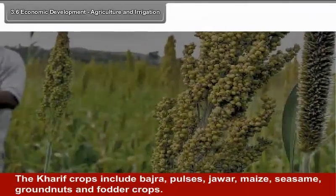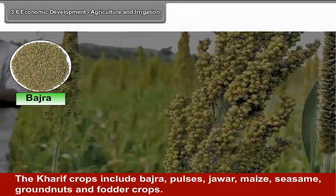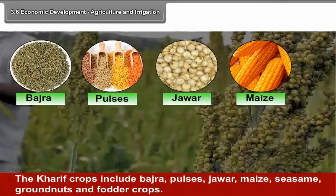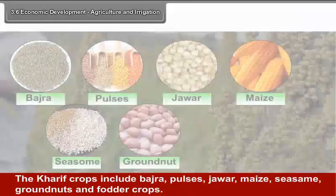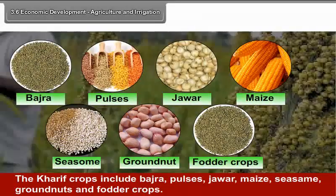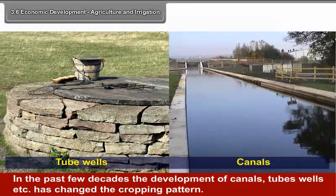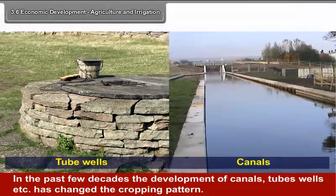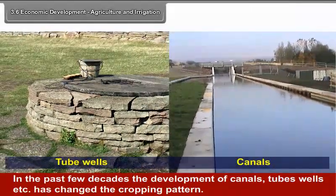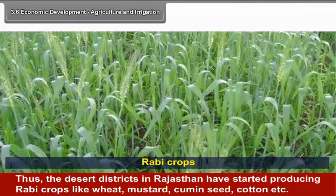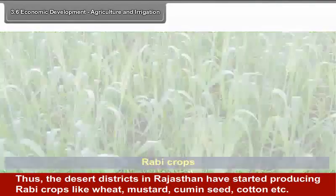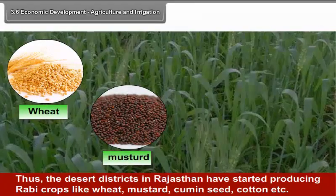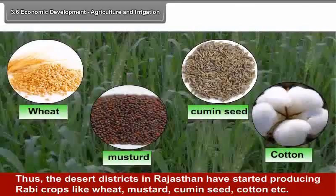The kharif crops include bajra, pulses, jawar, maize, sesame, groundnuts and fodder crops. In the past few decades, the development of canals, tube wells, etc. has changed the cropping pattern. The desert districts in Rajasthan have started producing rabi crops like wheat, mustard, cumin seed, cotton, etc.